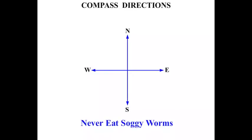In this lesson we do some work on compass directions. So we've got our directions there: North and South, East and West. And that silly saying, never eat soggy worms.